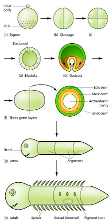Plant development is the process by which structures originate and mature as a plant grows. It is studied in plant anatomy and plant physiology as well as plant morphology. Plants constantly produce new tissues and structures throughout their life from meristems located at the tips of organs or between mature tissues. Thus, a living plant always has embryonic tissues. By contrast, an animal embryo will very early produce all of the body parts that it will ever have in its life, and from that point will only grow larger and more mature.